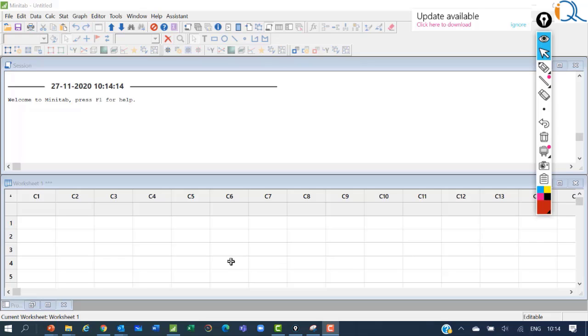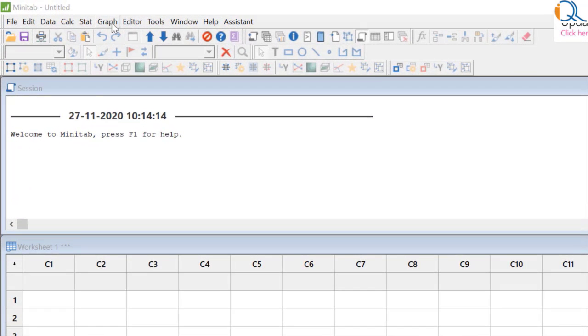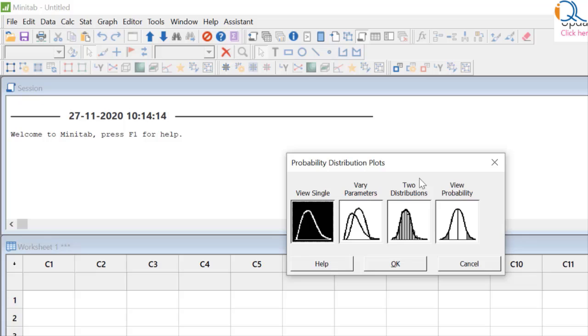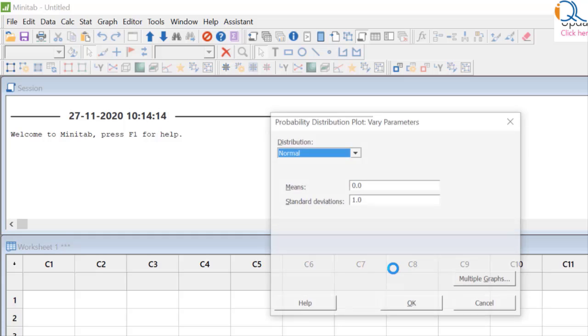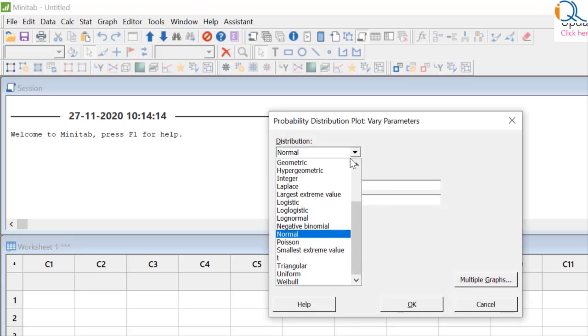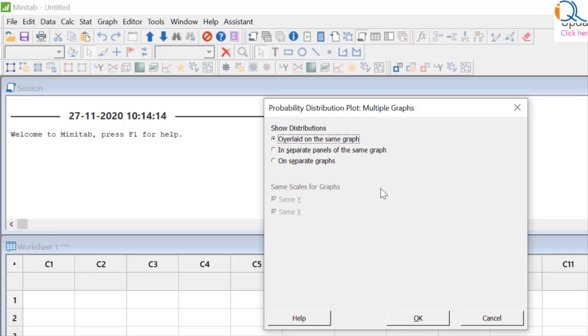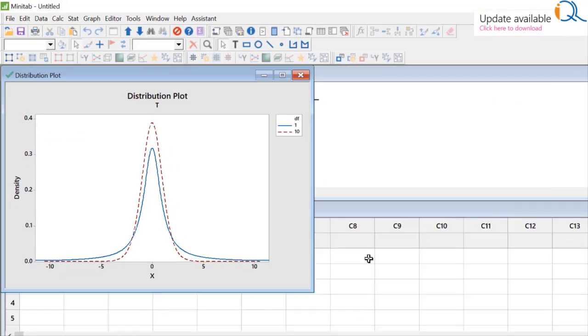We will now see shapes of some student's T distribution with various degrees of freedom. For that I am using Minitab software version 17. I click on the graph command and I use probability distribution plot and I use vary parameters where I can see student's T distribution with different degrees of freedom. In the distribution I select T. In the degrees of freedom values I say 1 and let us say 10. In the multiple graphs I say overlaid on the same graph.